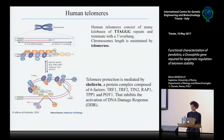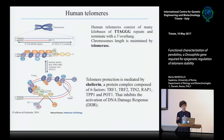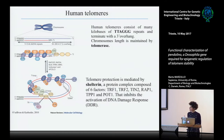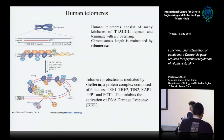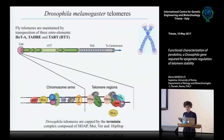Human telomeres are composed of tandem repeats of the sequence TTAGGG, and chromosome length is maintained by the action of a holoenzyme, the telomerase, that adds new TTAGGG at the ends of chromosomes using an RNA as template. Telomere capping is mediated by a protein complex called shelterin, composed of six proteins that localize and function exclusively at telomeres during all the cell cycle. The shelterin components inhibit both the telomerase, active only during embryogenesis and in highly proliferative tissues, and the proteins of the DDR. So mutations in one or more of these factors could cause genome instability that is at the basis of different diseases such as cancer.